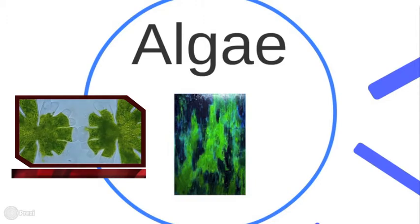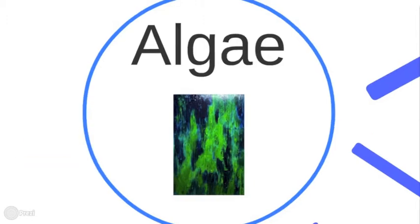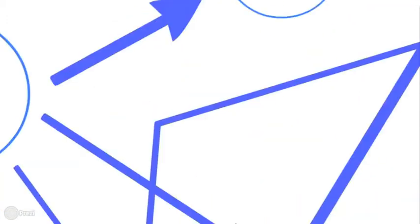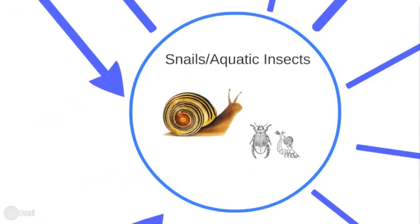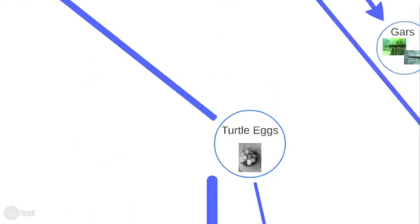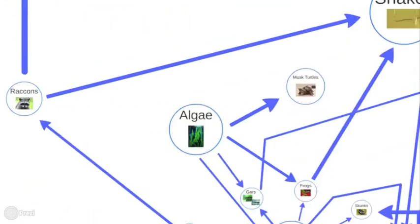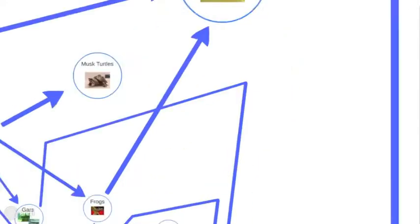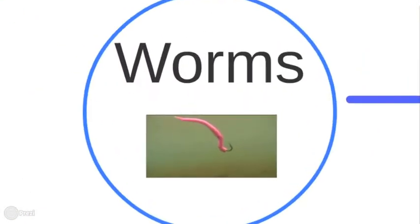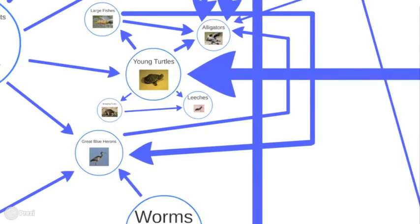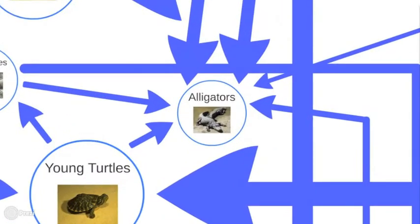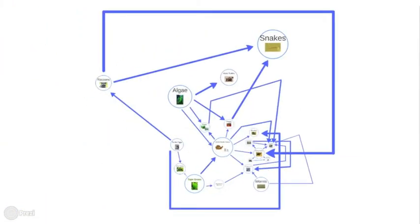Algae is also a primary producer. Musk turtles eat algae, the gar eats algae as well, frogs eat algae, and so do snails and aquatic insects. So there you have it — the food chain of the Florida Short River community. See you next time.